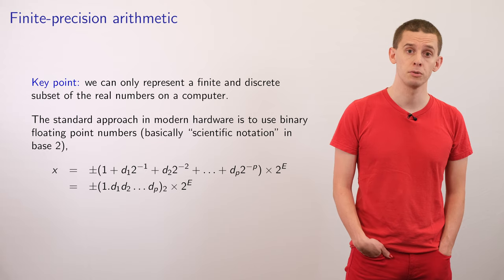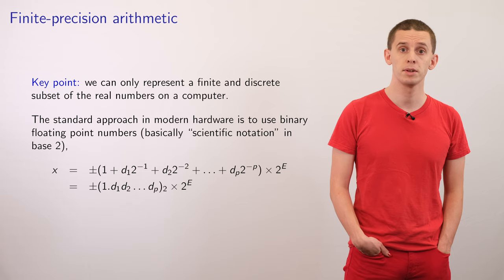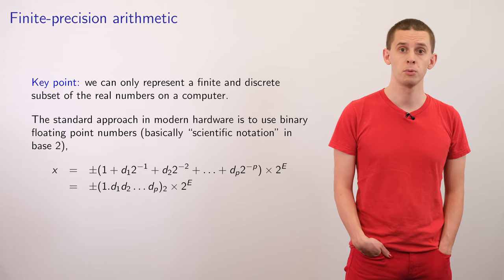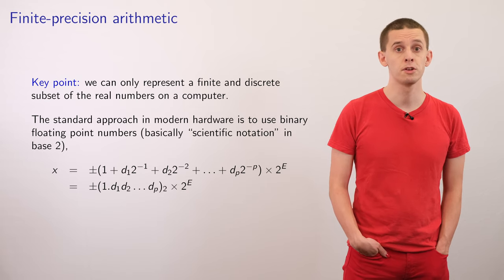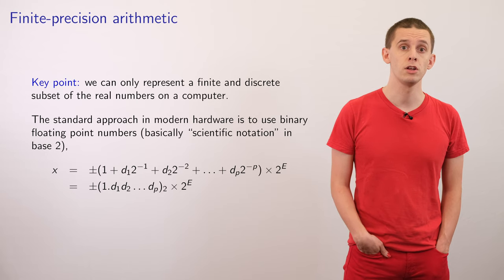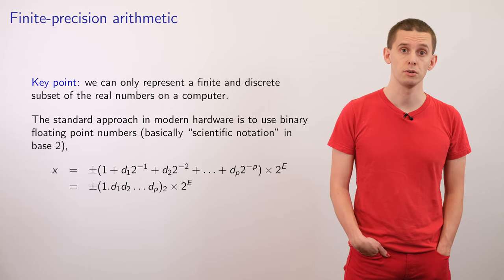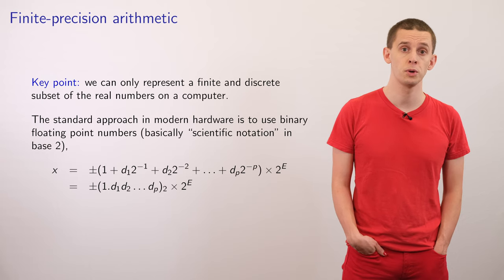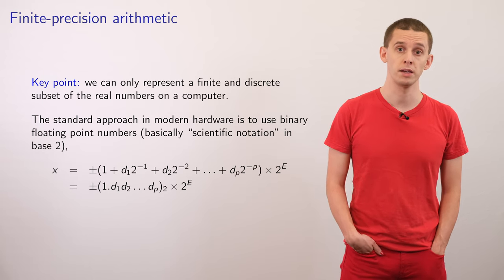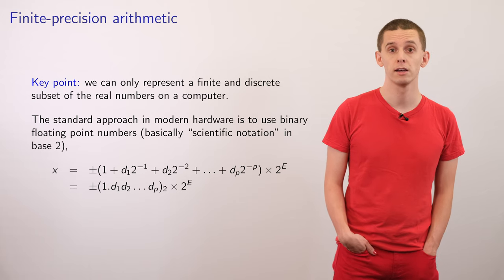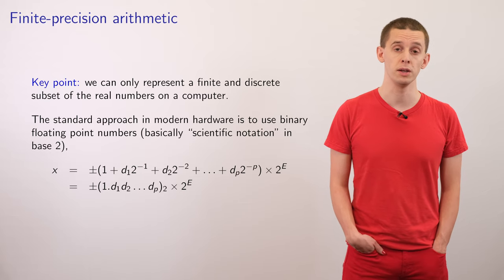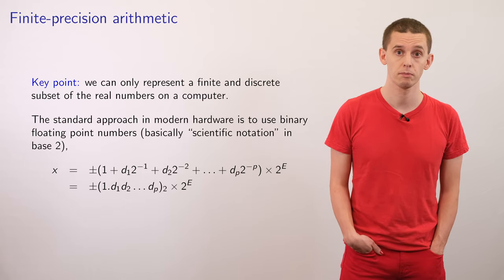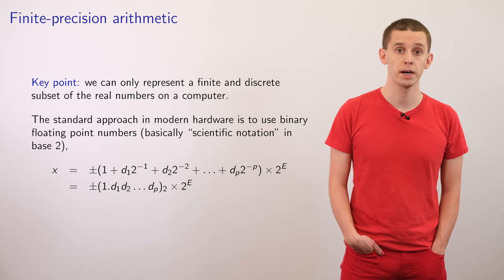So let's talk about finite precision arithmetic. When we represent numbers on a computer, we only have limited storage available. Each number has to be represented using a finite amount of computer memory. On modern computer hardware, the typical approach to represent real numbers is to use an analog of scientific notation. Scientific notation provides us with a very flexible way to represent numbers across many scales — we could think about large numbers like 5 times 10 to the 20, or small numbers like 1.23 times 10 to the minus 86, and in both cases we have a very compact representation.